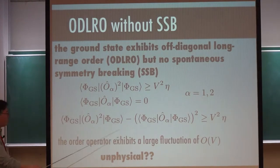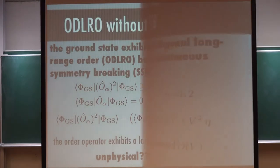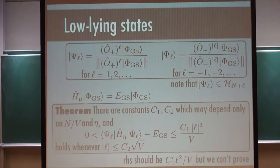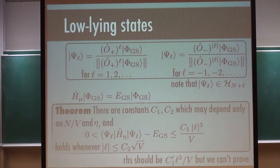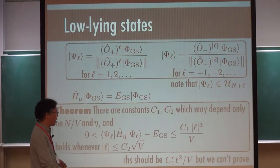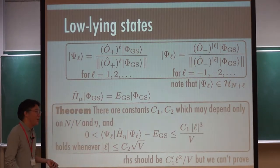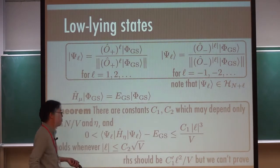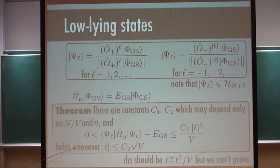This says that O has a huge fluctuation — is it unphysical? Actually I will argue that this is a physical scene. Now I can repeat the same story. I define a variational state with exactly the same definition as before, and I can prove that this is a quasi-ground state. If you remember, this was L squared before, but for some technical reason I cannot replace this with L squared in this case — but this is what we can prove now.